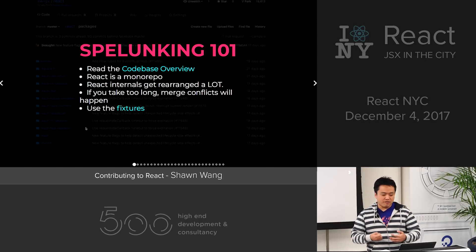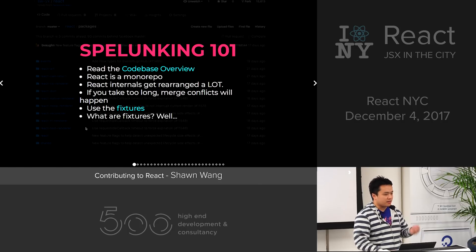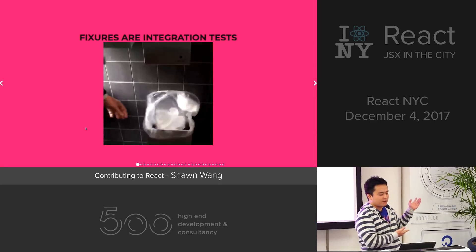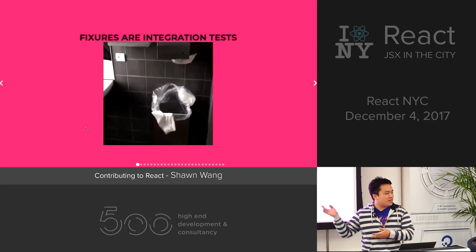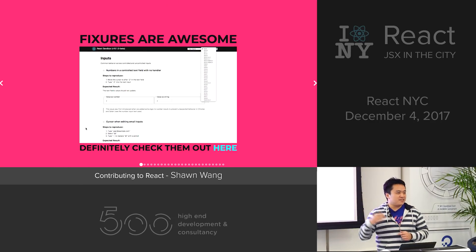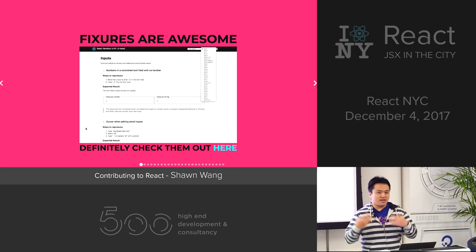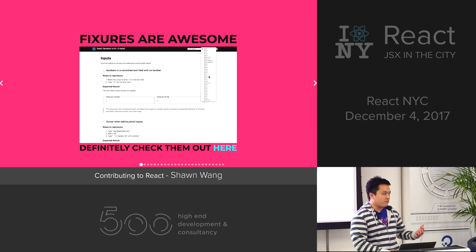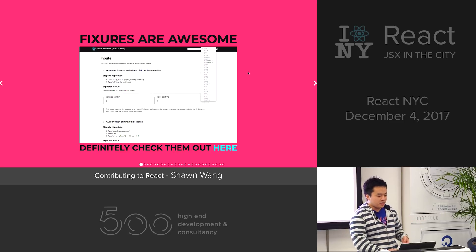The last tip I have is to use the fixtures. Fixtures are integration tests — things that work individually may not work together in a real-world situation. The React DOM fixture lets you select different React versions and see the same thing across versions, which is great for spotting regressions in your behavior as well as in your local build when you're adding a new warning. They're a great concept that applies beyond React.